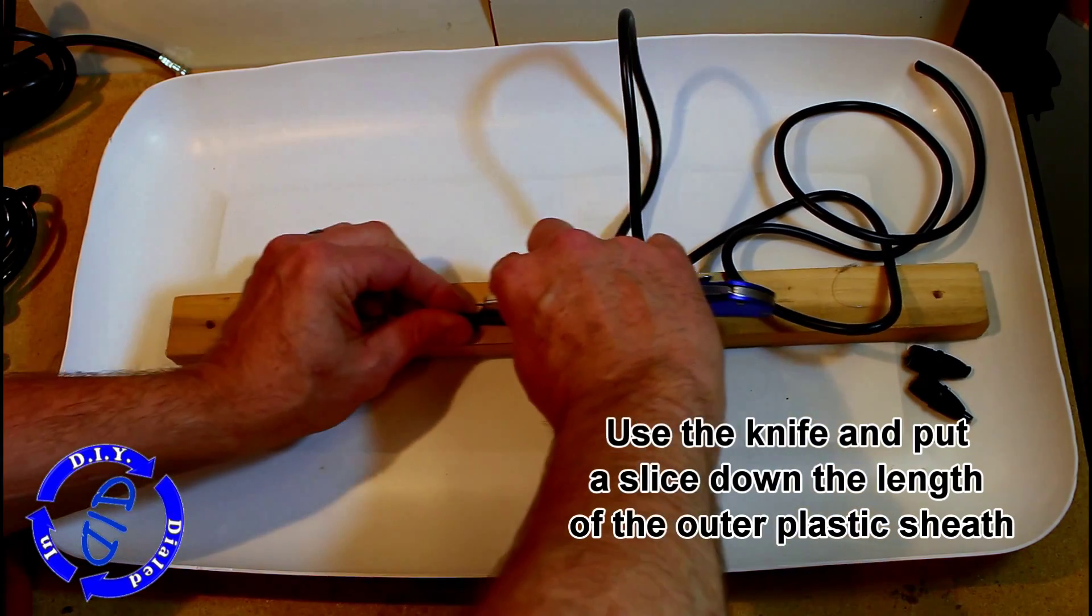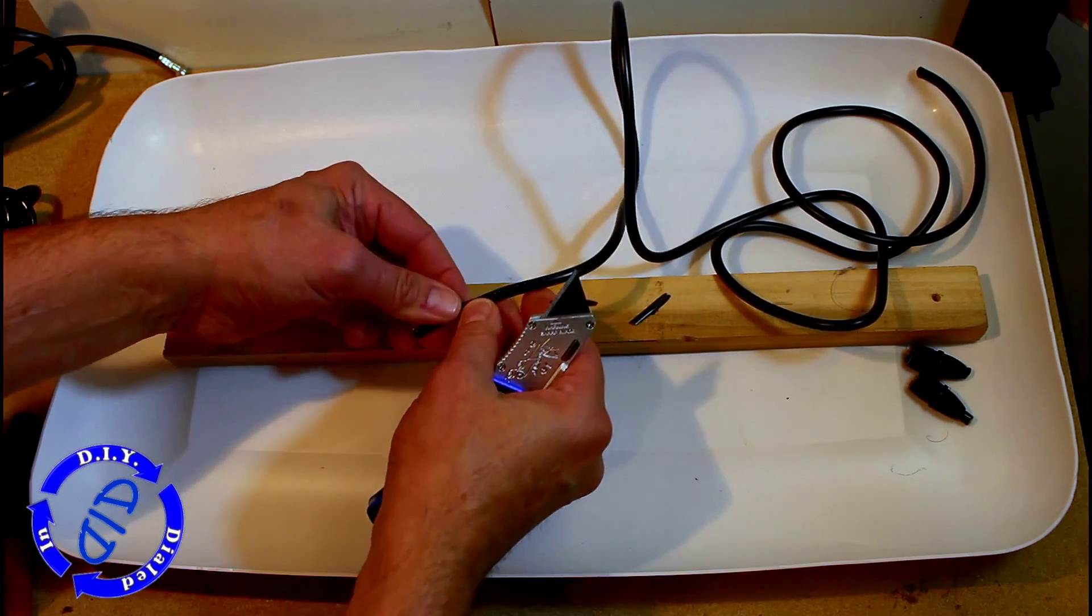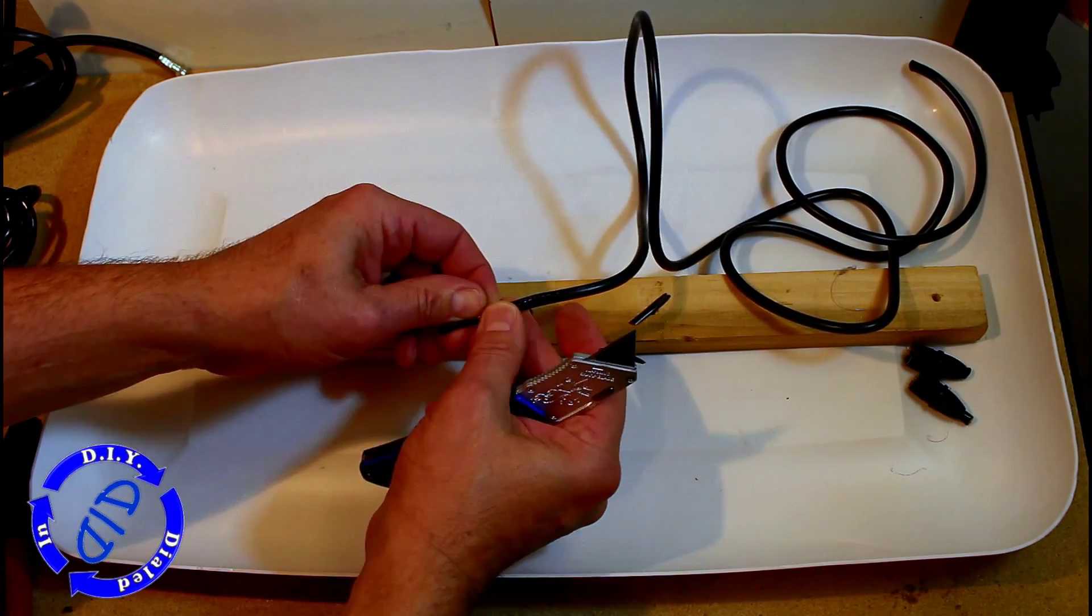We need to start with a knife and cut a little slit down the entire length of this outside plastic wrap, which is the outer layer of insulation.